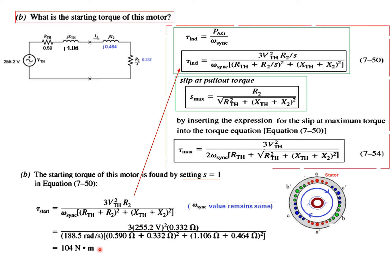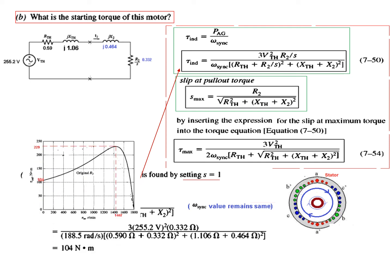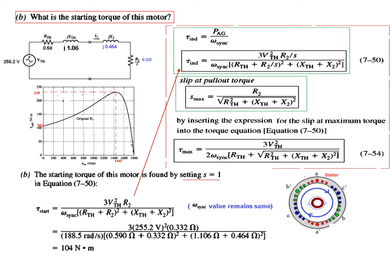This is the equation. Plugging in all the values, the starting torque will be 104 newton-meters. We go back to the graph to see this concept. The torque-speed curve starts at this point, which is 104 newton-meters when the speed is zero—that means the rotor is not moving.